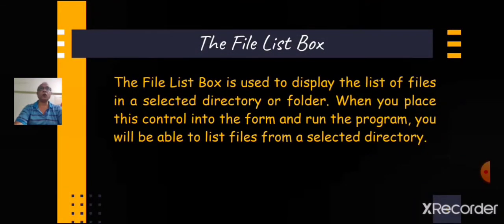The FileListBox is used to display the list of files in a selected directory or folder. The basic property of this control is also called Path, and it is the path name of the folder whose files are displayed. When you place this control into the form and run the program, you will be able to list files from a selected directory.